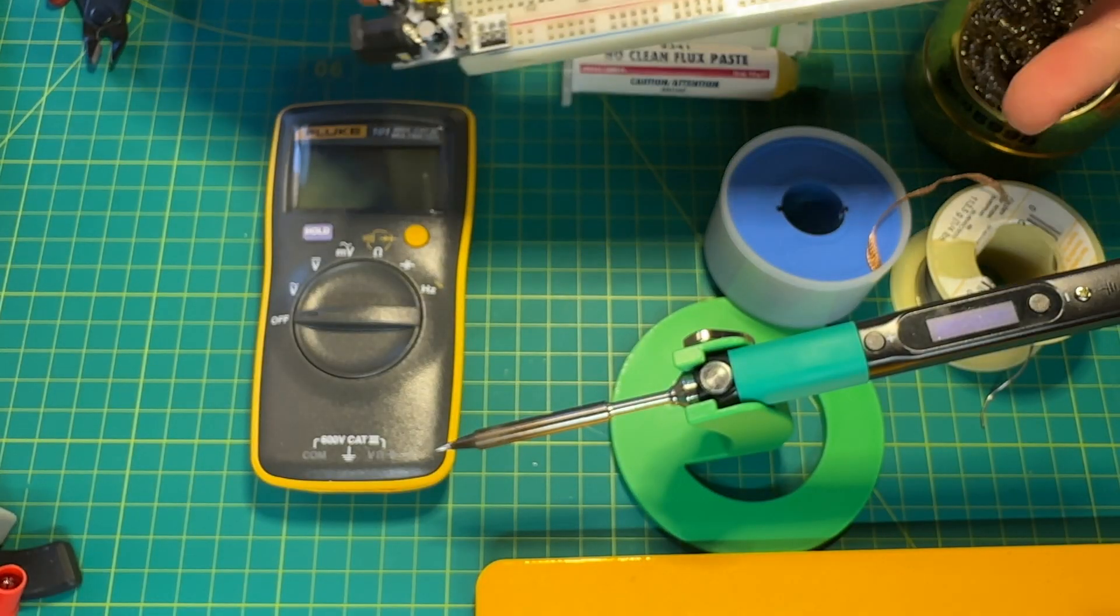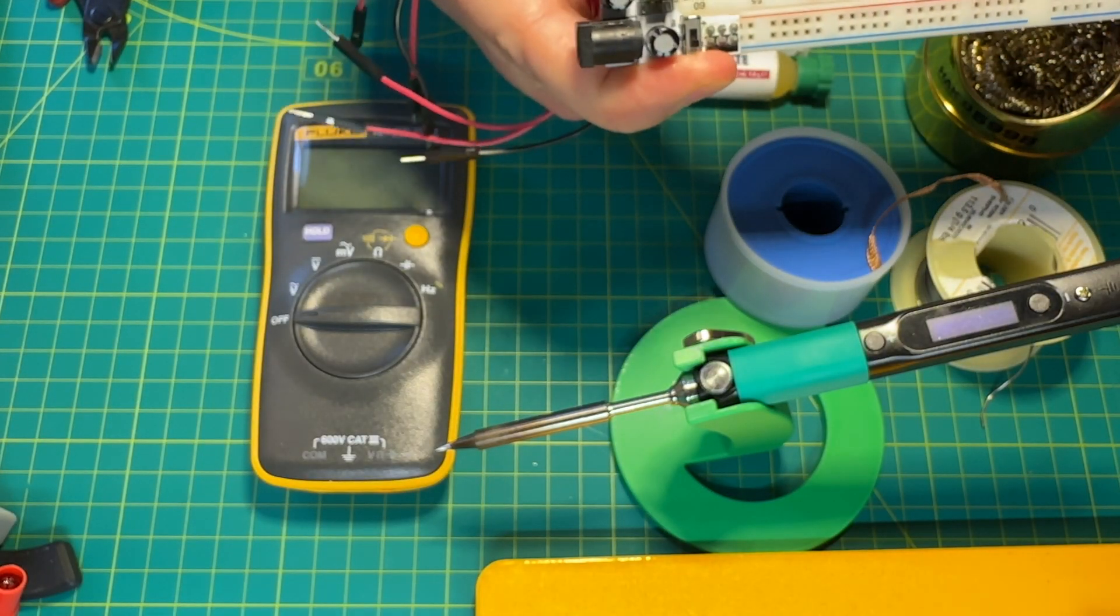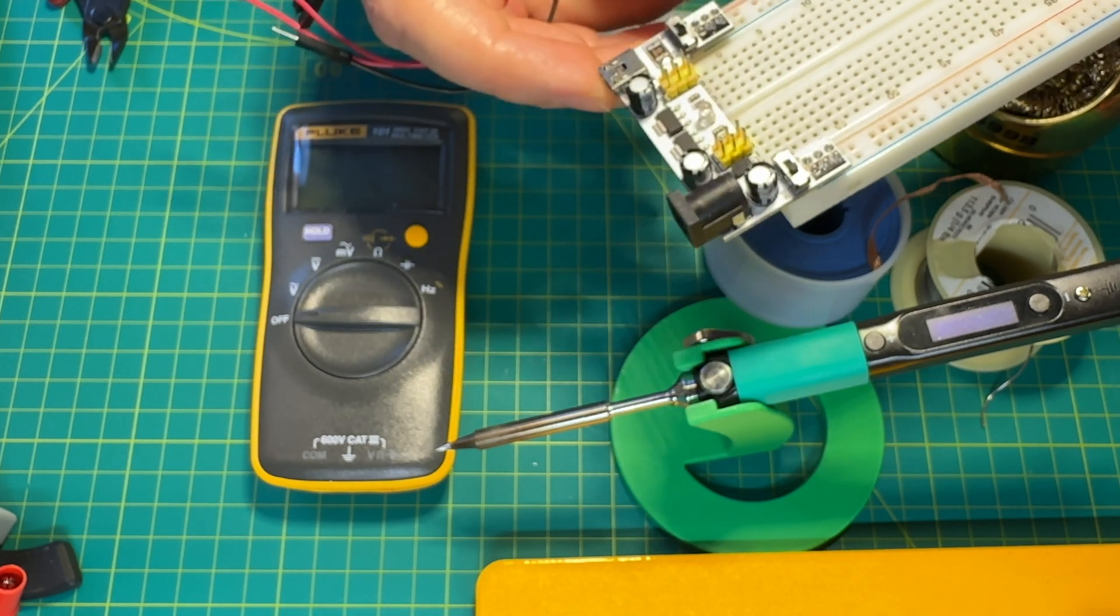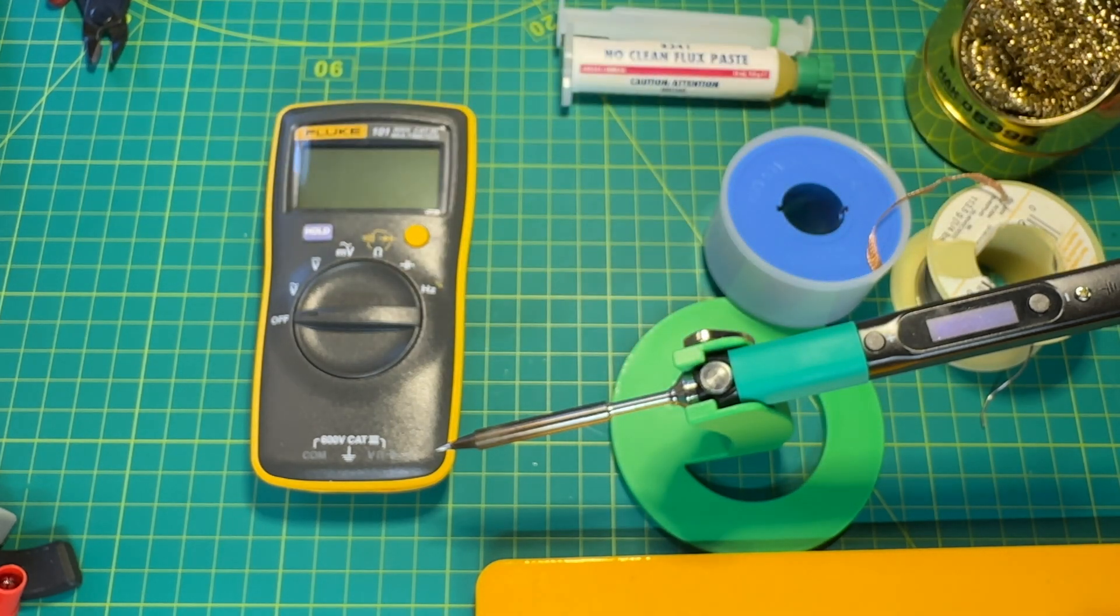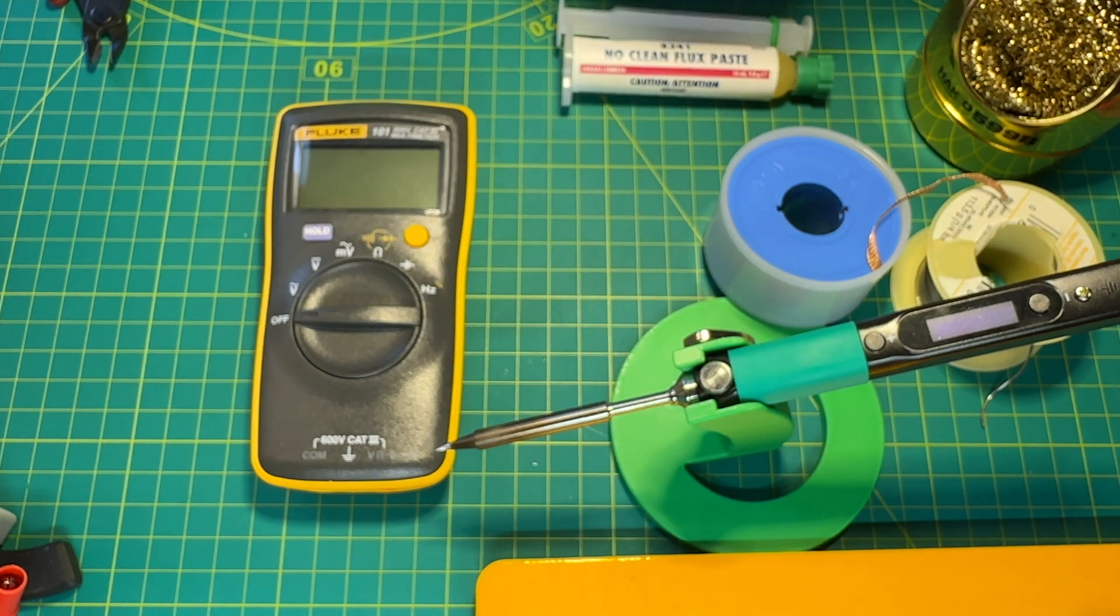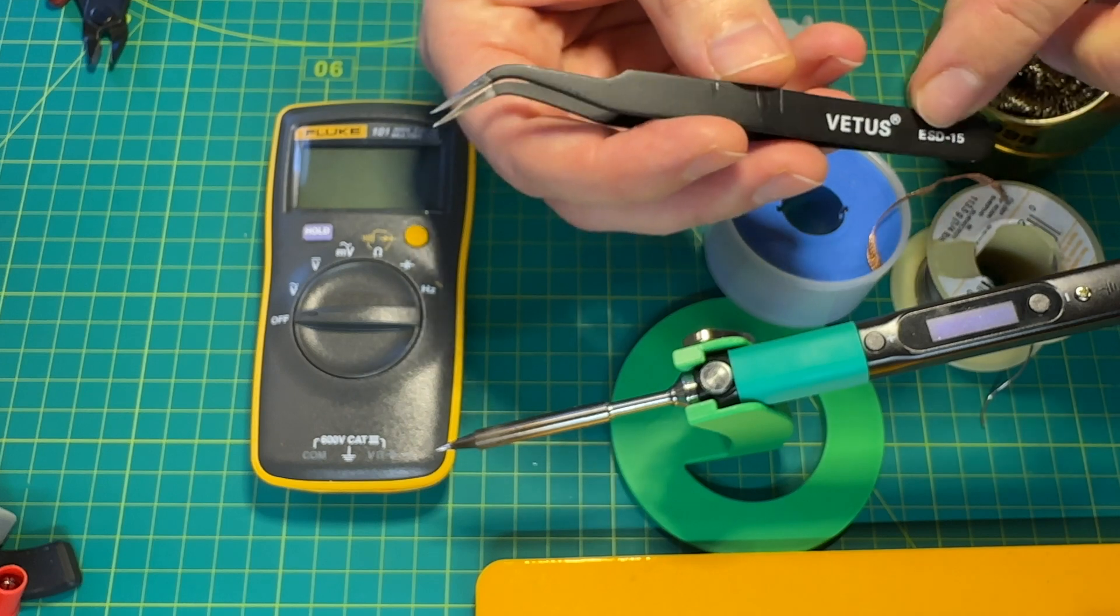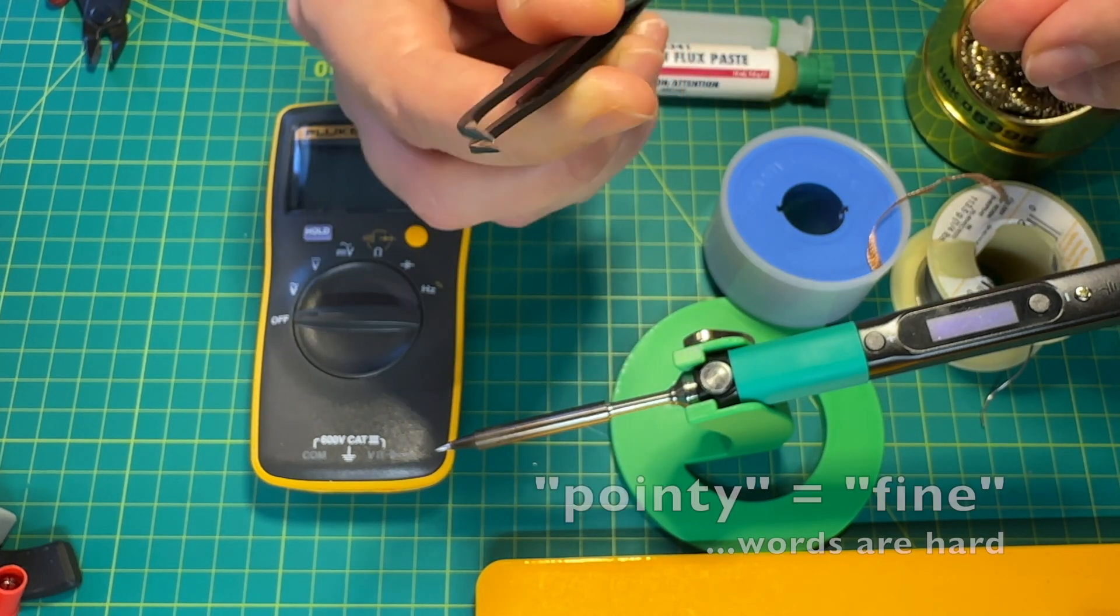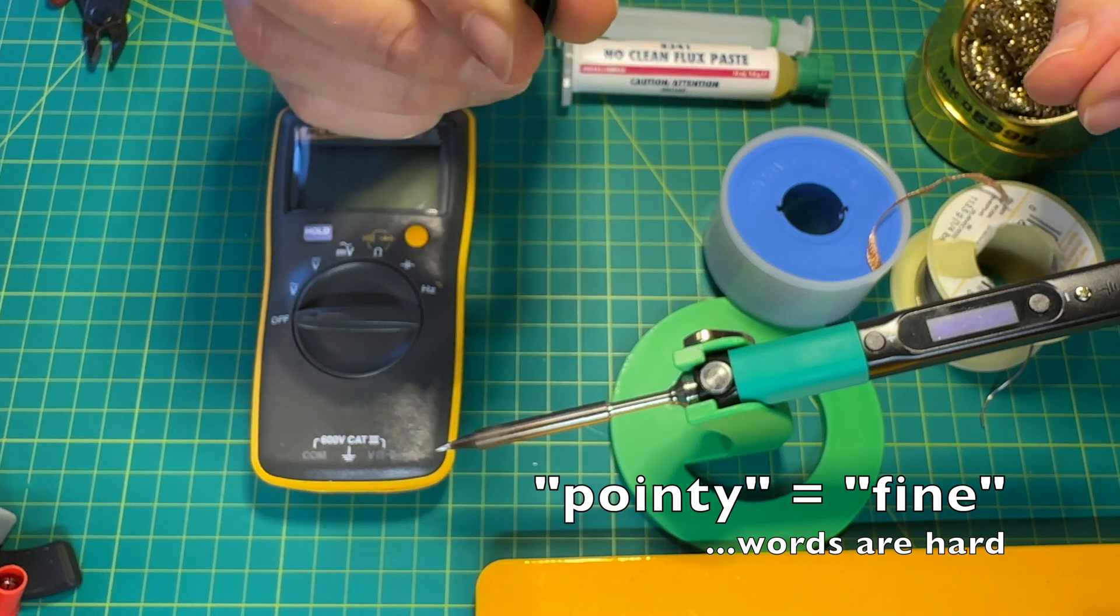Get a breadboard, and ideally with some kind of power supply, it's just easier to power your electronics, and some jumper wires. You'll also need tweezers. Get the ESD safe ones that have a pointy tip to make sure you can grab smaller parts.